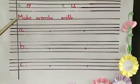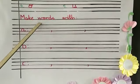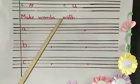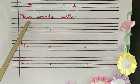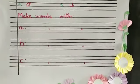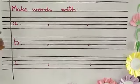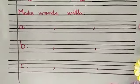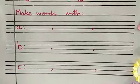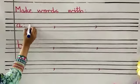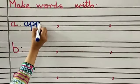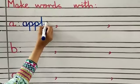Read the question with me: M, A, K, E — make. W, O, R, D, S — words. Make words with A, B, C. Tell me any three words that begin with A. Can you spell apple? A, double P, L, E — apple. You will do this work in the joining handwriting.